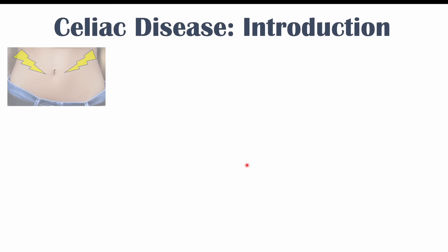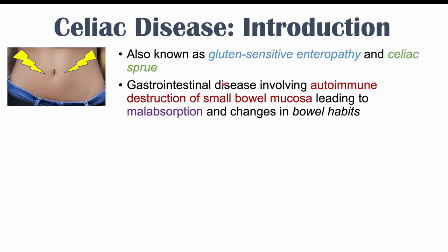Celiac disease is also known as gluten-sensitive enteropathy and celiac sprue. It is a gastrointestinal disease involving autoimmune destruction of small bowel mucosa leading to malabsorption and changes in bowel habits. This involves the patient's own immune system attacking the small bowel mucosa — the inner lining of the small intestine — which is involved in absorption of nutrients. Damage to that mucosa leads to malabsorption and changes in bowel habits.